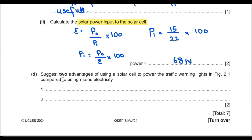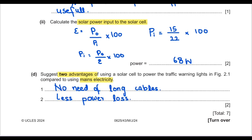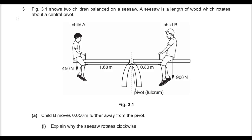Part d: suggest two advantages of using a solar cell to power the traffic lights compared to using mains electricity. It eliminates the need for cables, and less power would be used overall.